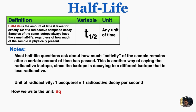Just a few more notes. Most half-life questions ask about how much activity of the sample remains after a certain amount of time has passed. This is another way of saying the radioactive isotope, since the isotope is decaying to a different isotope that is less radioactive or less active. The unit of radioactivity is one becquerel, or one radioactive decay per second. We write the unit as Bq in problems.